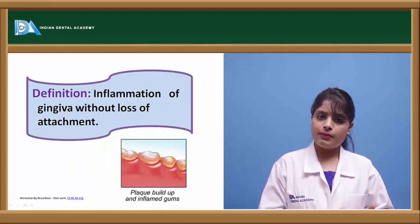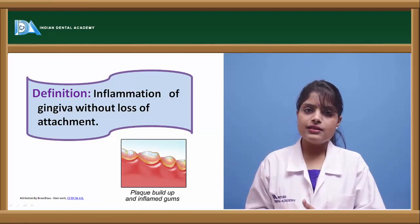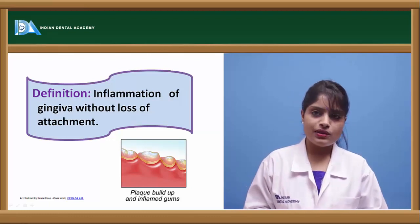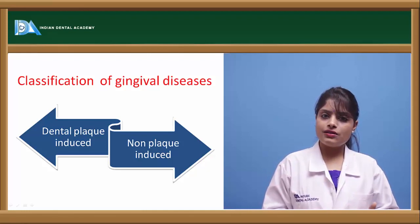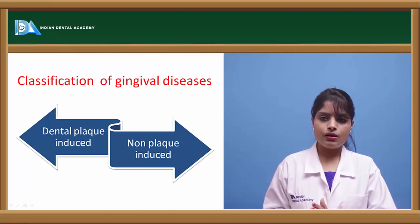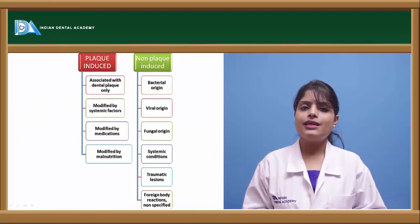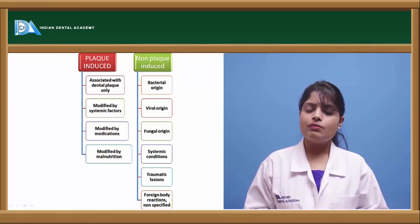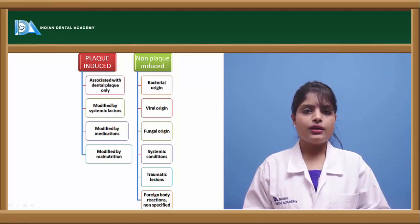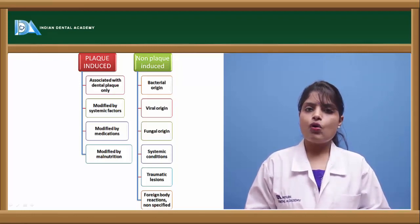Gingivitis is the inflammation of gingiva without any loss of attachment of the junctional epithelium, whereas in periodontitis there is loss of the junctional epithelium and loss of attachment. Gingival diseases are classified into dental plaque-induced diseases and non-plaque-induced diseases. Plaque-induced diseases are associated with dental plaque, systemic factors, medications such as valproic acid, sodium valproate, and phenytoin — which cause gingival enlargement — or modified by malnutrition, for example kwashiorkor or marasmus.